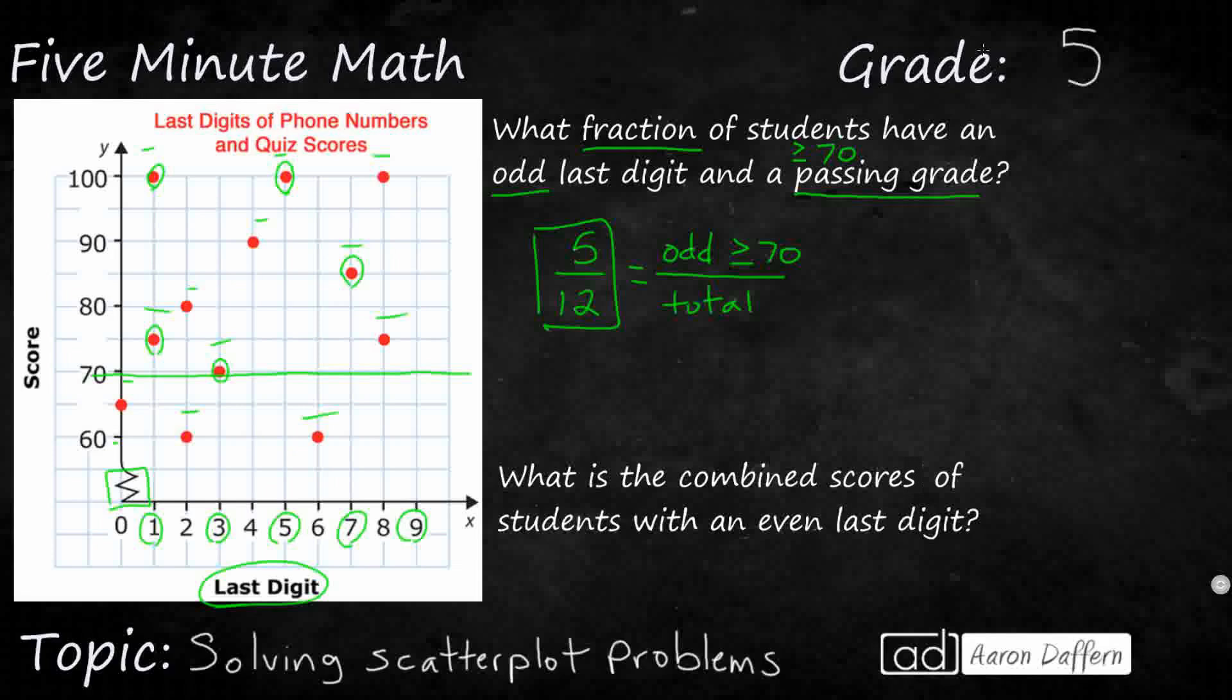We can get a different question from the exact same data. Look at the second question. What is the combined scores of students with an even last digit? Well, when we're talking about combined, let's know that we are thinking about addition. And instead of including all numbers, we're just including those that have an even last digit. So that's the box around those.